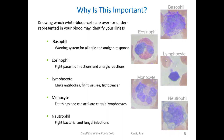Lymphocytes are not nearly as photogenic, but they are incredibly important in that they fight viruses and cancer. Second from the bottom are monocytes, which collect dead cell debris and present these remains to lymphocytes. This information exchange allows lymphocytes to make antibodies to help fight future infections. Last are the neutrophils, which are the most abundant white blood cell. These cells are responsible for fighting bacterial and fungal infections.